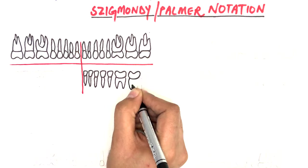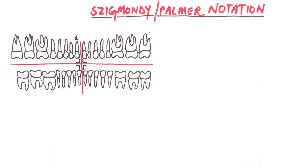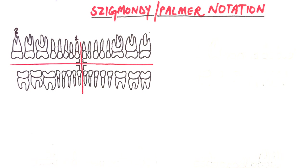Each quadrant is assigned a specific symbol which represents that quadrant, and the symbol surrounds a specific alphabet or number denoting either a primary or permanent tooth. For permanent teeth, the tooth closest to the midline is denoted as tooth number one of the corresponding quadrant. For example, the central incisor is designated tooth number one and represents the first tooth in the quadrant, while the third molar is designated as tooth number eight, representing the last tooth in the quadrant.